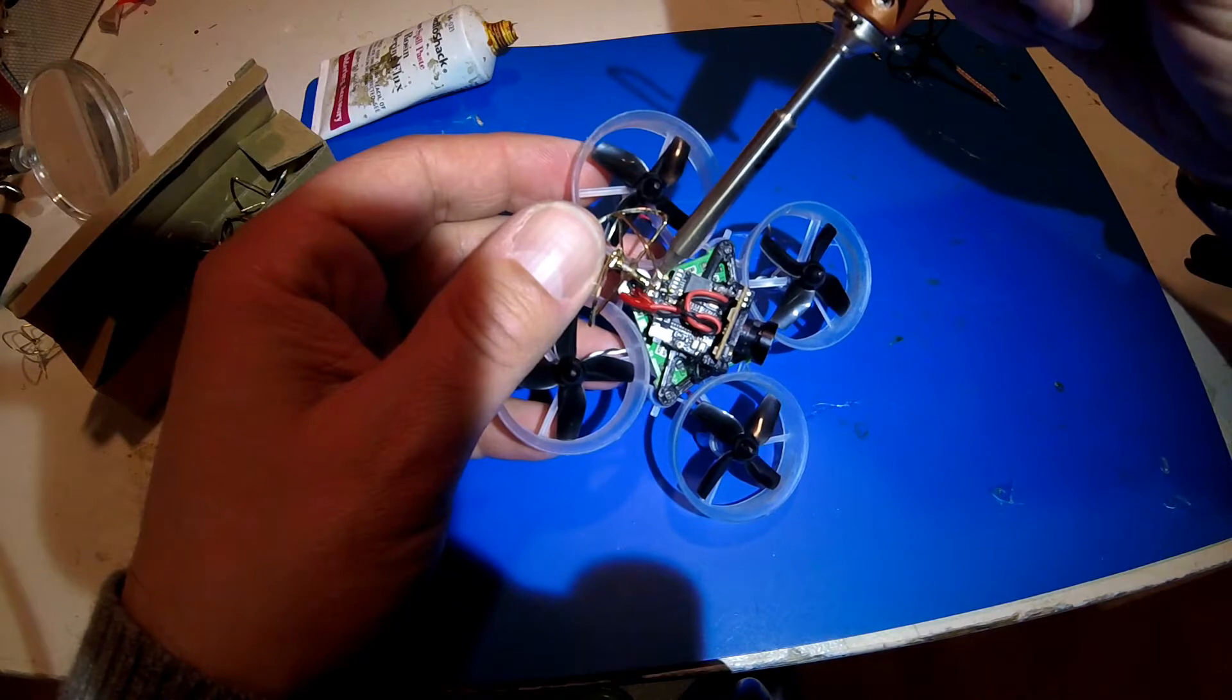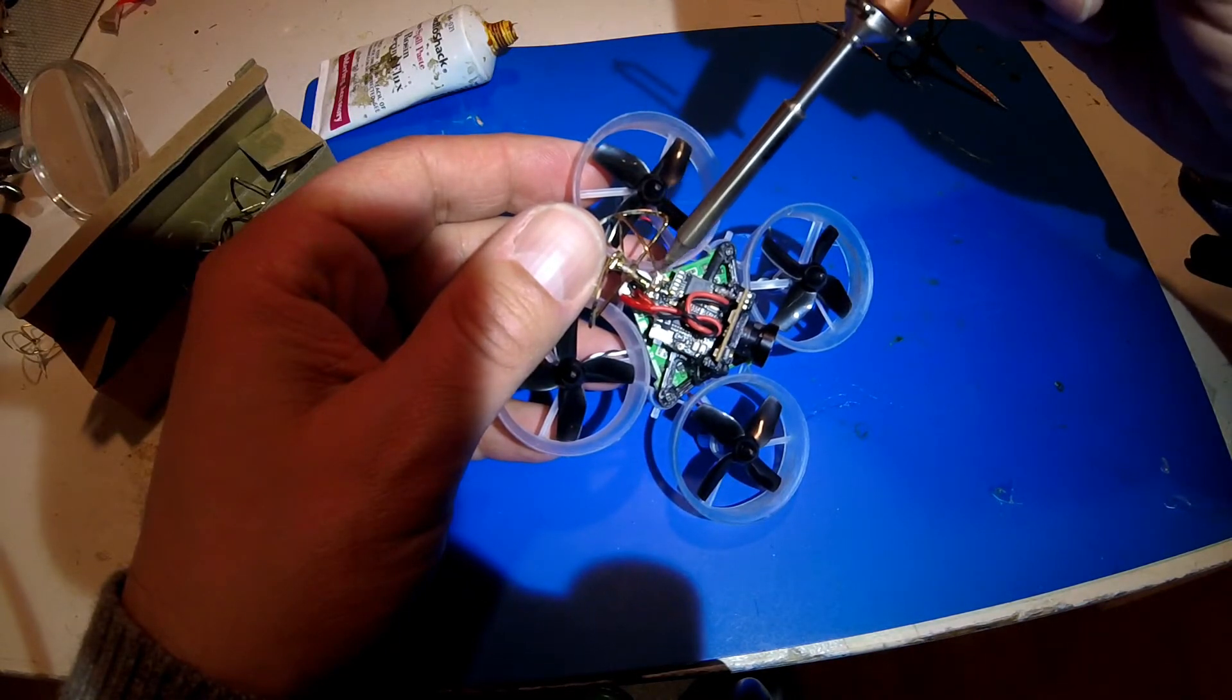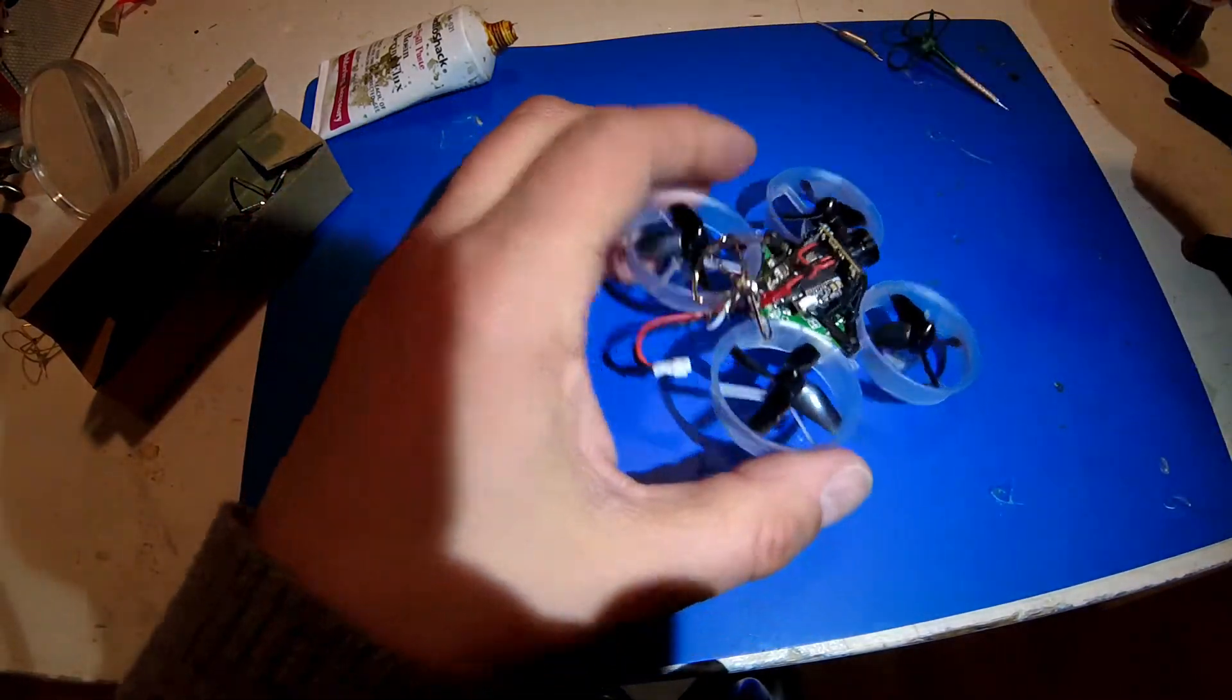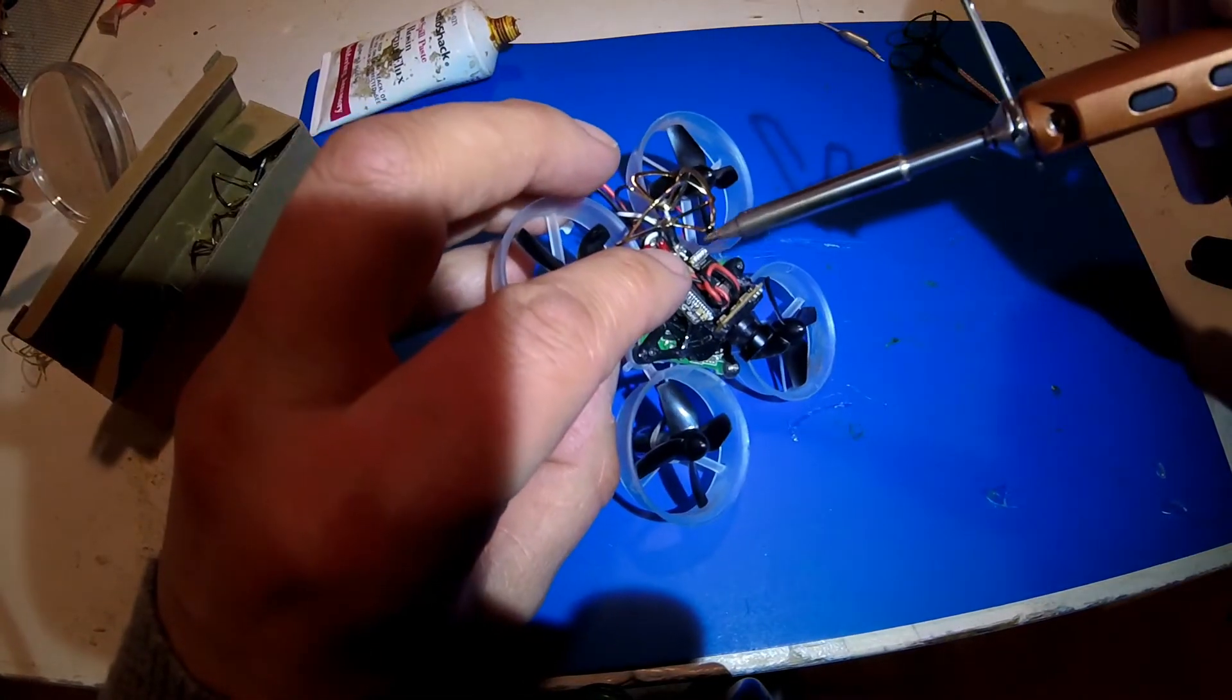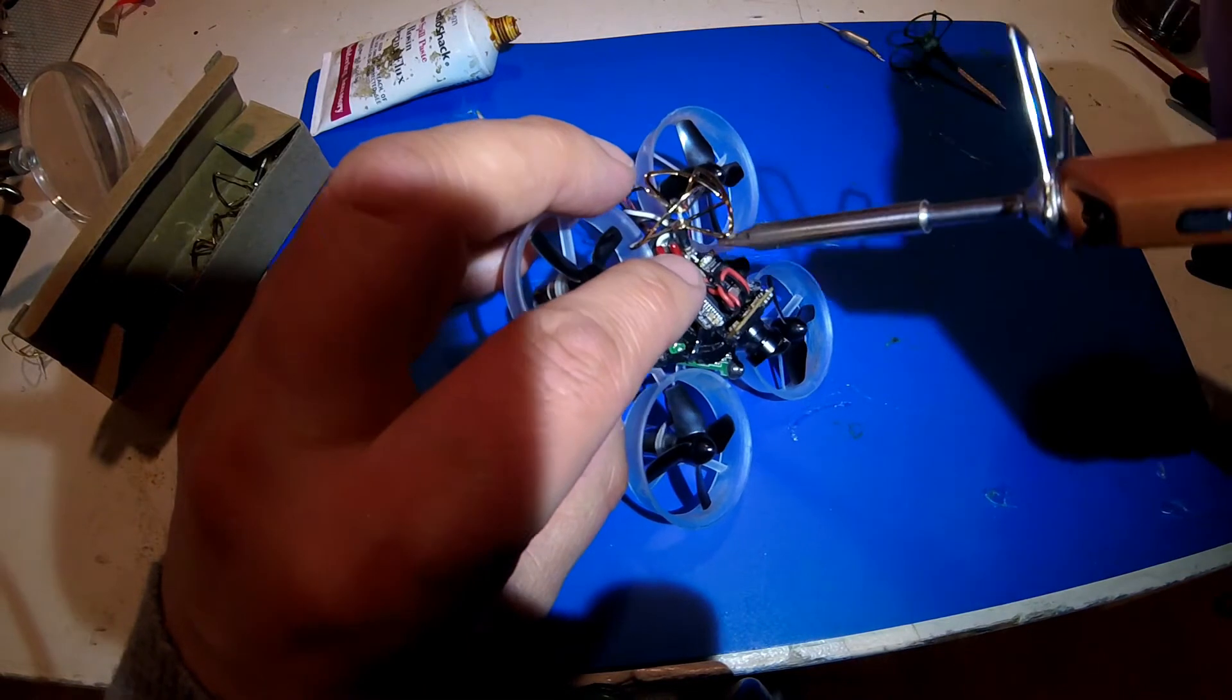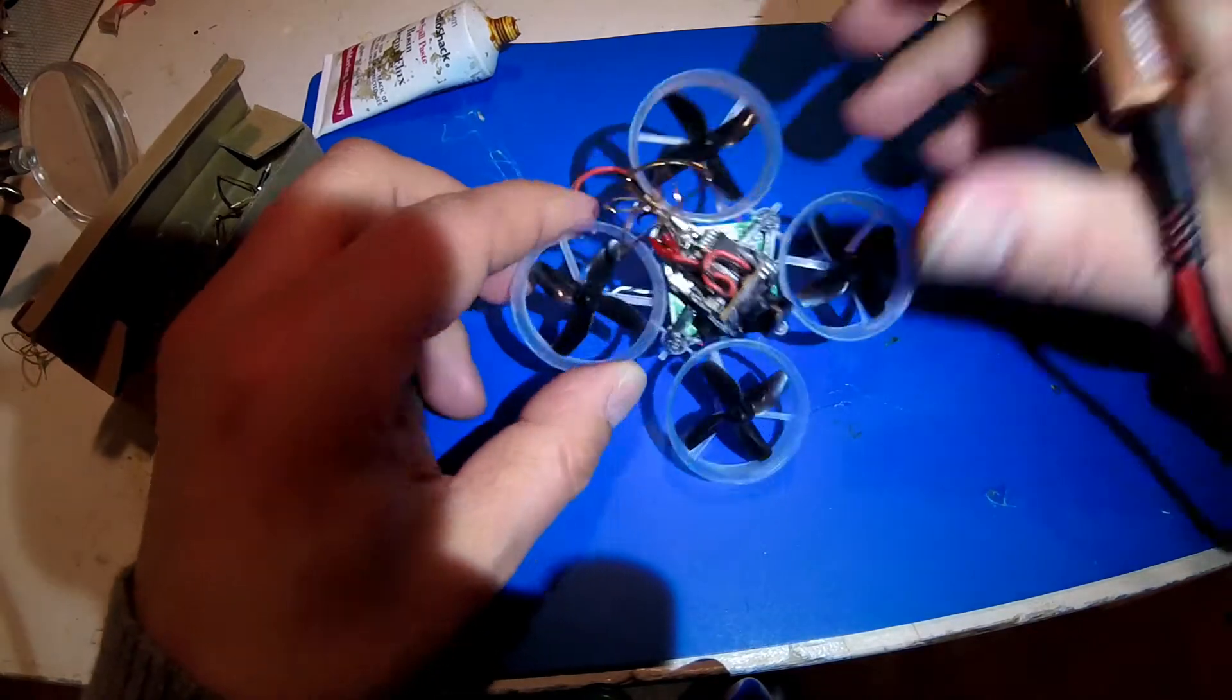I also wanted to be careful not to use too much solder. If I did, then I could potentially make a connection between two points of the antenna, and that would render it useless. Once I was confident that I had both of those ends done, I did a visual inspection and plugged it in and made sure that it worked.